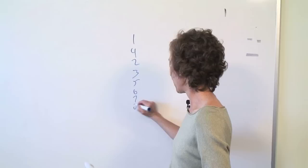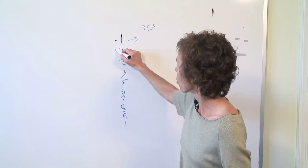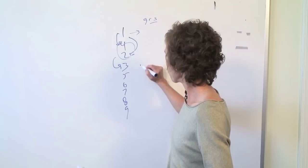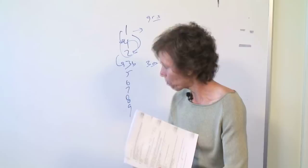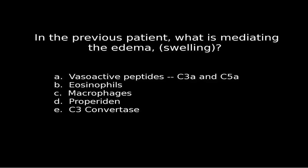the C1 esterase splits the C1 complex, and you eventually get your C3 convertase, which gives you C3b and C3a. As you can see, you're going to use up that C4 because nothing is going to inhibit this from continuing to act. You keep activating complement, so you get that edema, and this can be a life-threatening situation.